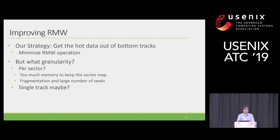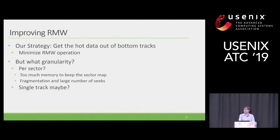Our strategy is to move hot data from the bottom track and put it on the top tracks, where there is no problem for random writes. The question is at what granularity to do this. Per sector is definitely not ideal because it uses a lot of memory to keep a sector map, and it makes data fragmented, leading to many seeks and poor performance.